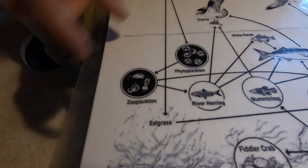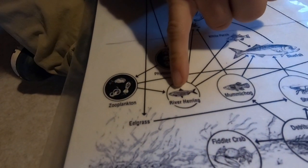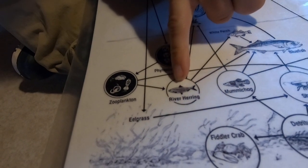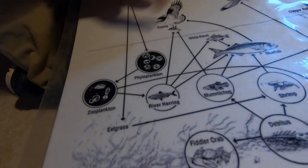After that comes your secondary consumers. Those are going to be things like these little fish that are going to eat the zooplankton.